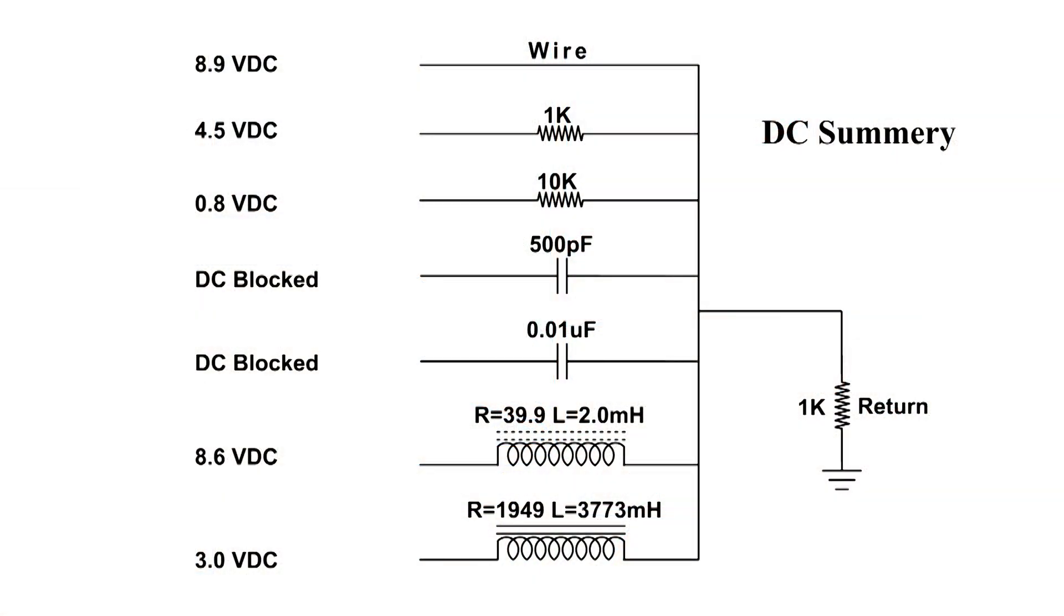Here's the summary. At the wire we had 8.9 volts. And at the 1K we had 4.5. And the 10K .8 volts. And the two capacitors, both of those blocked the DC. So they read infinite ohms. Both the coils would allow DC to pass through. At 39 ohms, we had 8.5 volts DC. And the larger coil, 1,949, we had 3 volts.